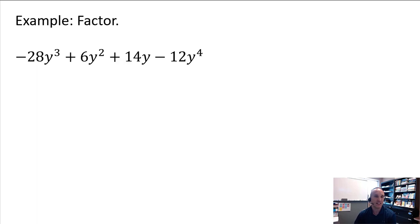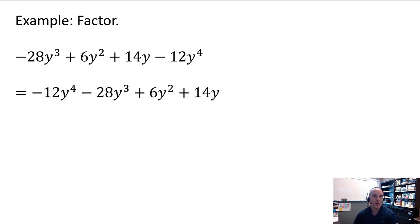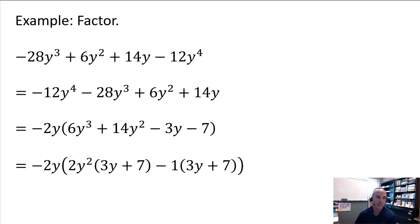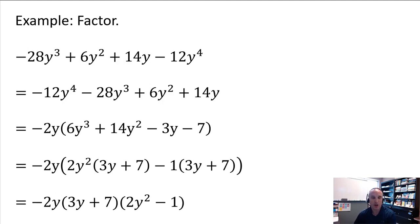The next example is also not in descending order, so we rewrite it. Now we can see the first term is negative, which means we'll need to factor that negative out. Also, every term has a factor of 2y, so we factor out a negative 2y from every term. Inside the parentheses we now have four terms, so we factor by grouping. From the first two terms inside, we factor out 2y squared; from the last two, we factor out negative 1. Both groups leave behind a common factor of 3y plus 7, which we factor out. Carrying our negative 2y GCF along, we get negative 2y times 3y plus 7 times 2y squared minus 1. Now we're fully factored.